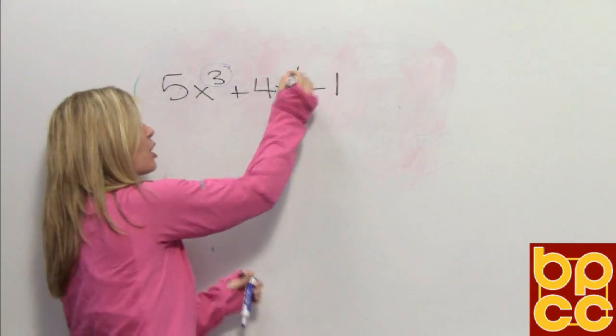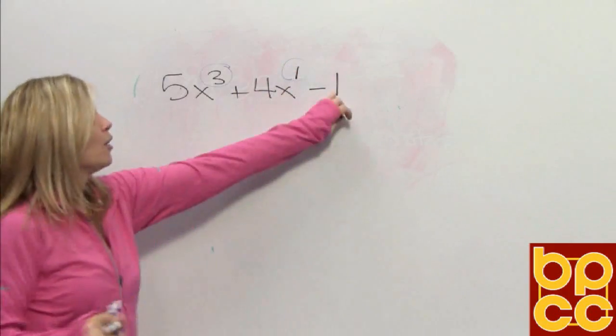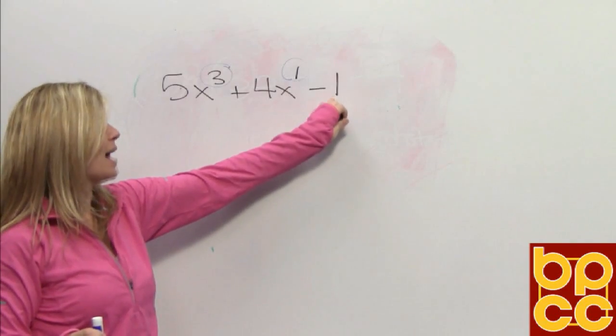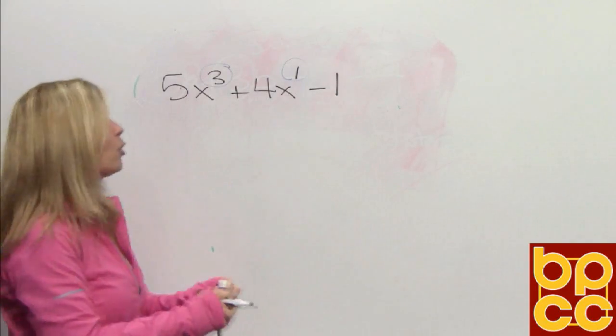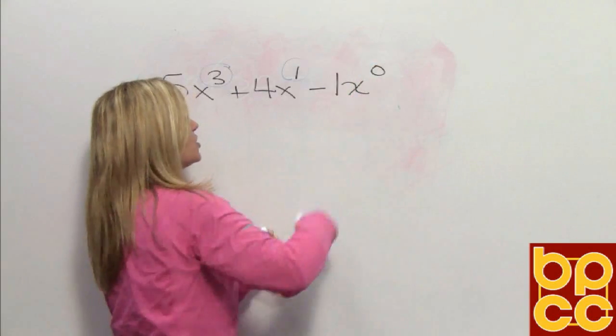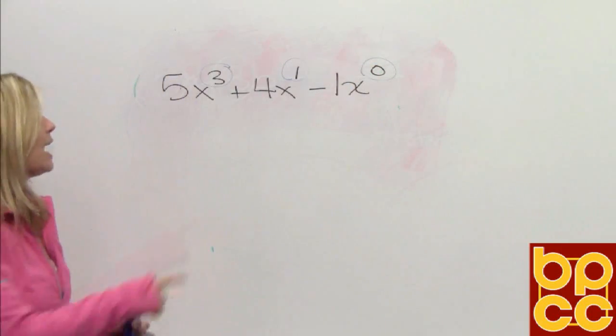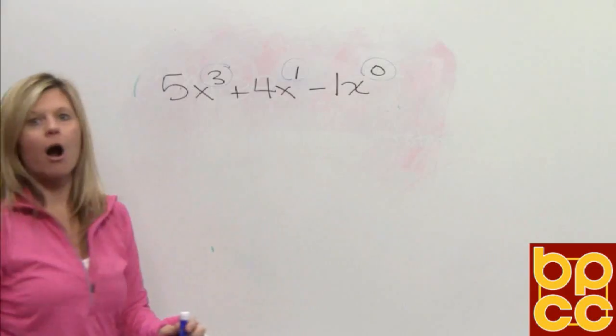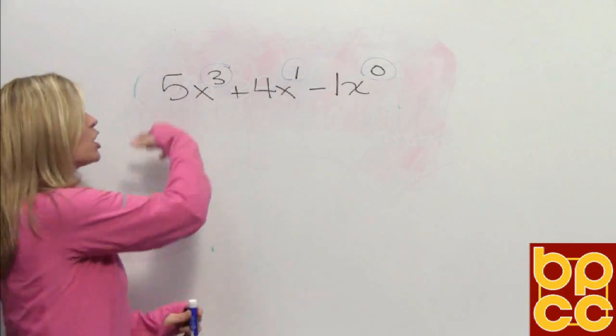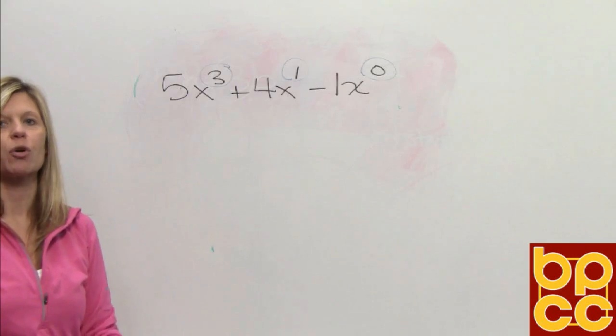The second one is not obvious. This is 4x. Every variable has an exponent. If it's not written, it's understood to be a 1. The third term, which is a constant, a number by itself, also has an exponent. But because you don't see a variable, there is no x, we write x⁰. If we were looking at these three monomials, our highest exponent is obviously the 3. We would say this trinomial is of degree 3.